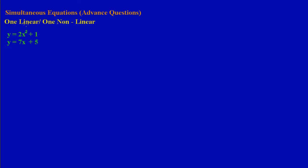A linear equation is an equation where the highest power of the variable is 1. In equation 2 we have y is equal to 7x plus 5 — that's equation 2, a linear equation where the highest power of x is 1. In equation 1 we have a nonlinear equation — specifically a quadratic equation, because the highest power of the variable x is 2.